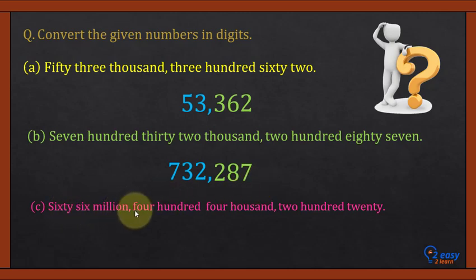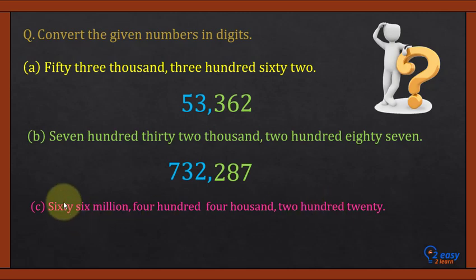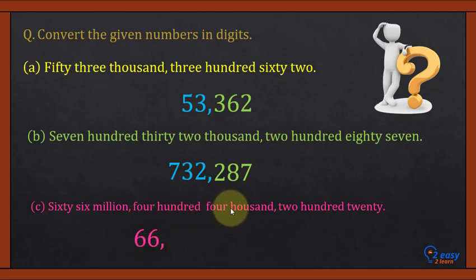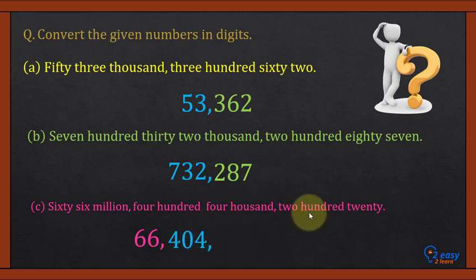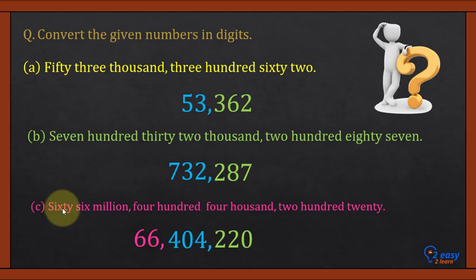Sixty-six million — this is the millions group. Four hundred four thousand — this is the thousands group. Two hundred twenty — this is the hundreds group. First write the millions group: sixty-six. Then the thousands group: four hundred four. Then the last hundreds group: two hundred twenty. So you can see how to write a number given in words into digit form: 66,404,220.